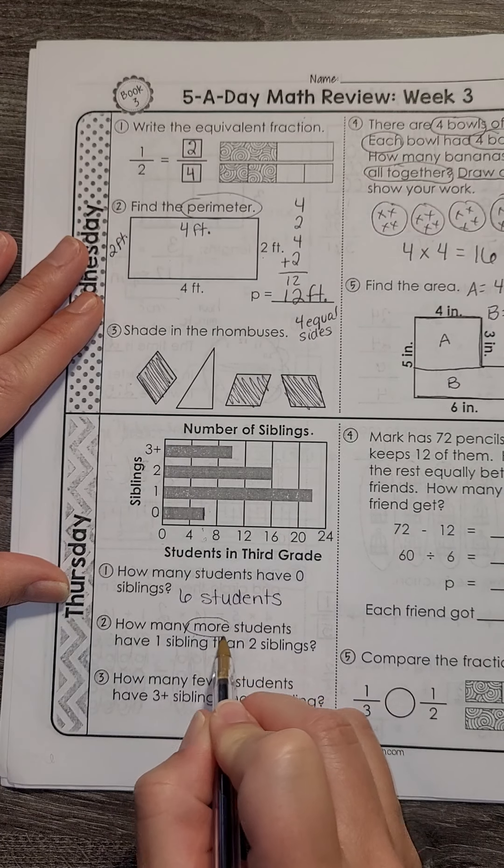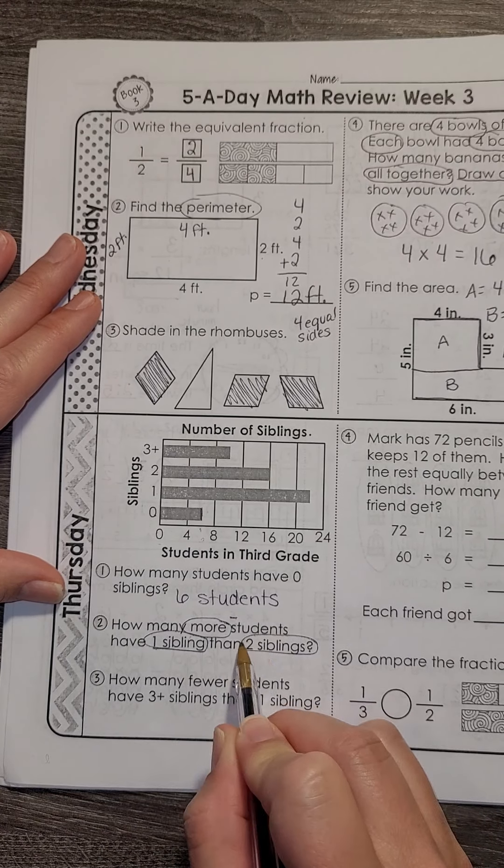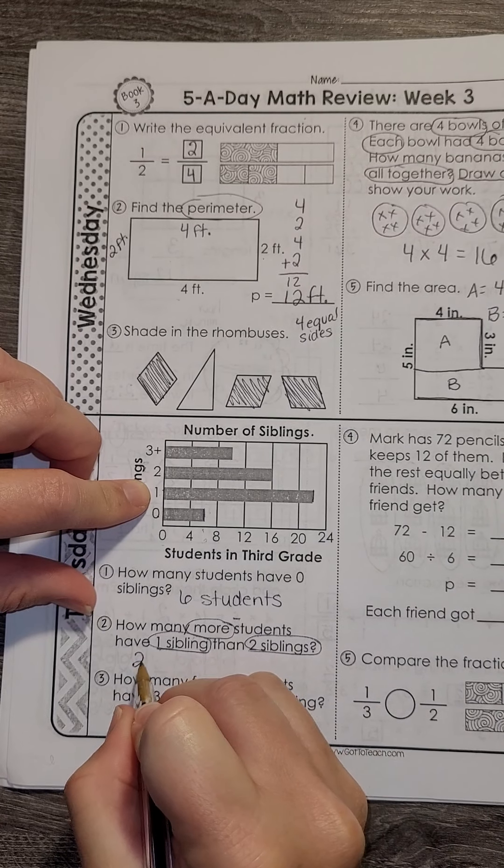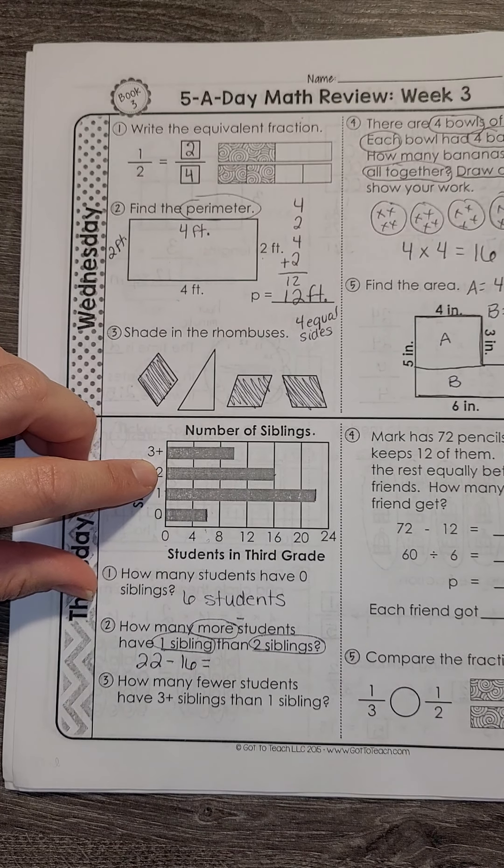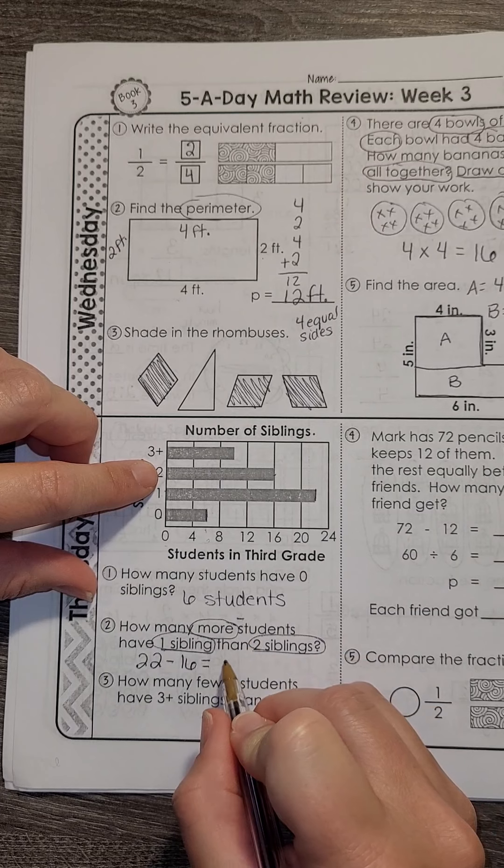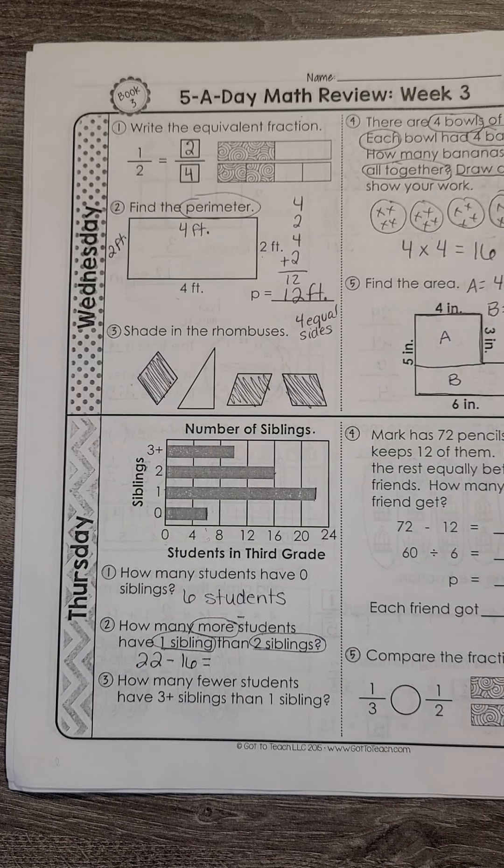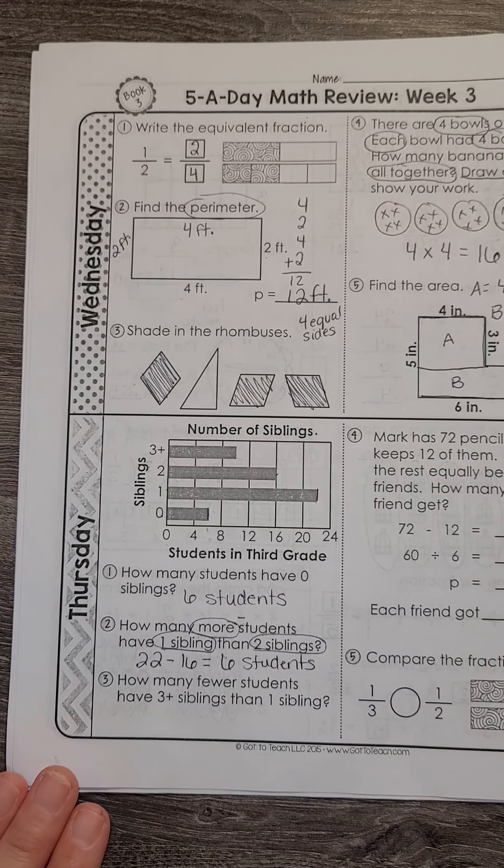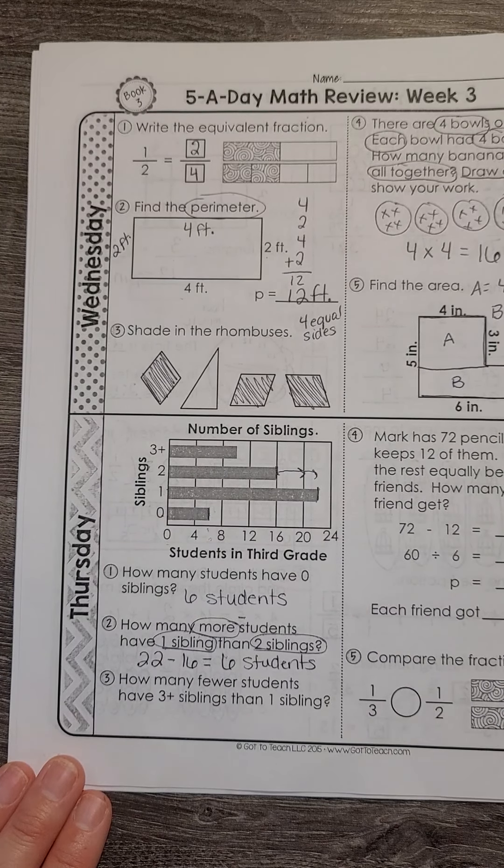How many more? There is a subtraction signal. Students have one sibling, then two. So we're going to look at one sibling. It's halfway between 20 and 24. I'm going to say that's 22. We look at two siblings and that's at 16. So we're going to subtract 22 minus 16. And we would have six as our answer with students. We could also look at our marks here and count up. This would be four plus another two.